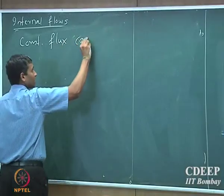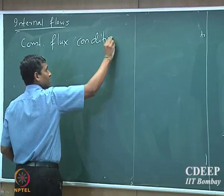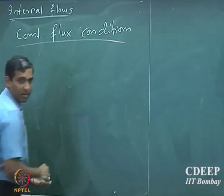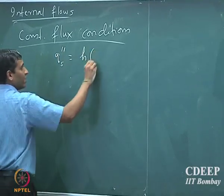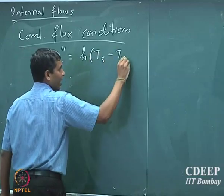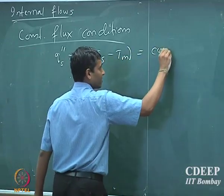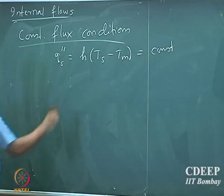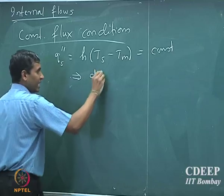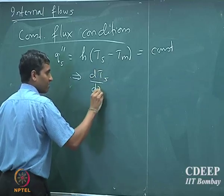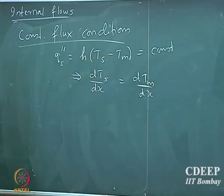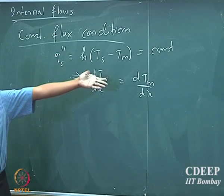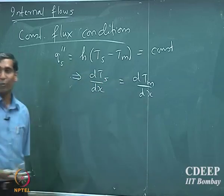Suppose I take the constant flux condition. The local flux q_s is h into (T_s minus T_m) and that is constant. Which means that dT_s/dx should be equal to dT_m/dx, because it is constant. All I have done is taken the first derivative with respect to x position. So, the gradients of these two have to be equal.